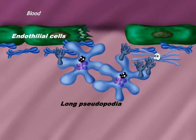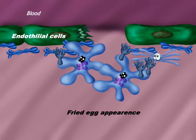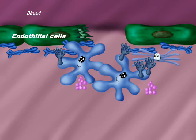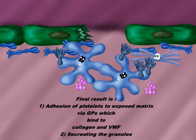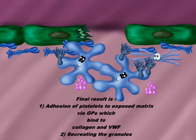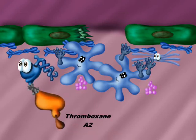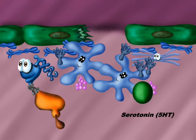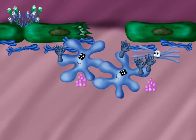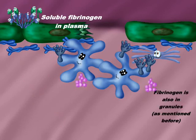Platelets will extrude long pseudopodia with granules in the center, resulting in a characteristic fried egg appearance. Then granules are secreted. The final result of all these steps is adhesion of platelets to the exposed matrix via glycoprotein receptors binding to collagen and von Willebrand factor, along with secretion of platelet granules. Thromboxane A2 and serotonin from the granules cause vasoconstriction.